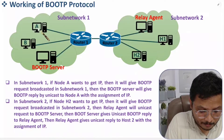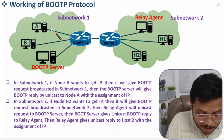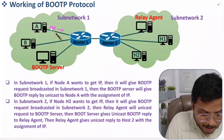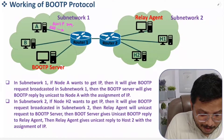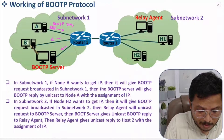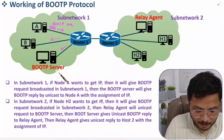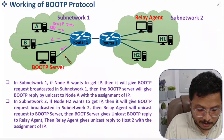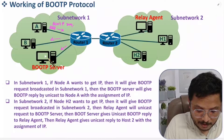Node A does not have an IP, so it will broadcast a frame — a BOOTP request — over the entire sub-network one. Other hosts will discard this request, but the BOOTP server in this network will receive it. The request is regarding IP assignment for Node A.